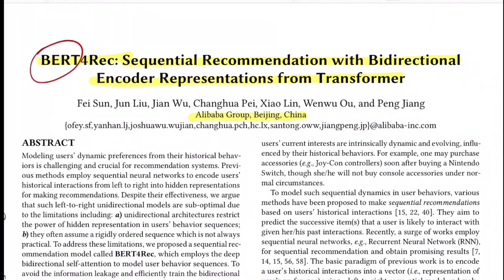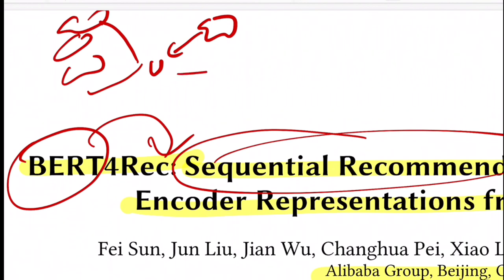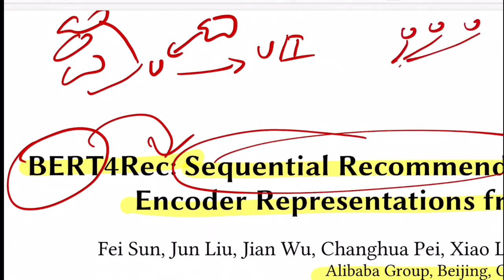The paper proposes using BERT for a specific type of recommendations called sequential recommendations. Sequential recommendation systems are different from traditional systems, which recommend objects based on user-item similarity or collaborative filtering — where if your friends like a certain thing, the chances are high you'll also like it.